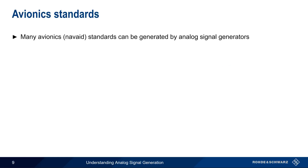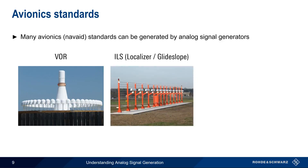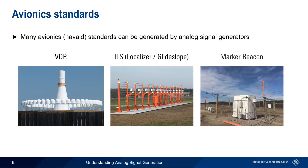In addition to generic AM, FM, PM, and pulse modulation, many of the signals used in avionics – that is, those generated by navigational aids – can be generated by an analog signal generator. These include things like VHF omnidirectional range, or VOR, both localizer and glide slope signals in the instrument landing system, or ILS, as well as signals from marker and non-directional beacons.